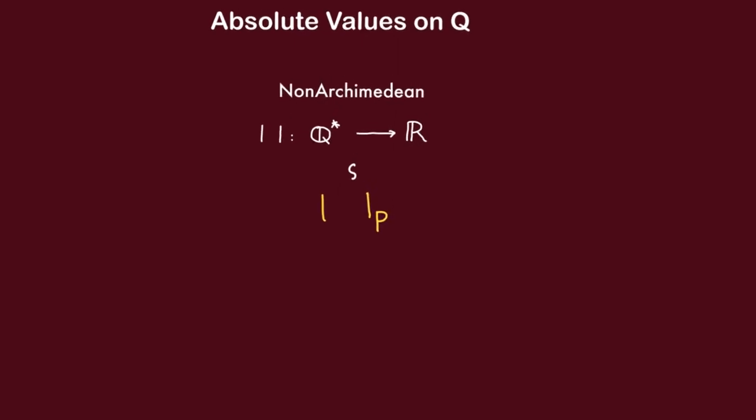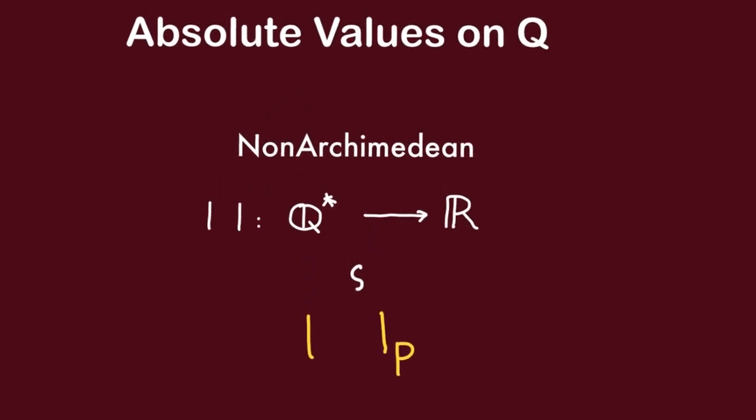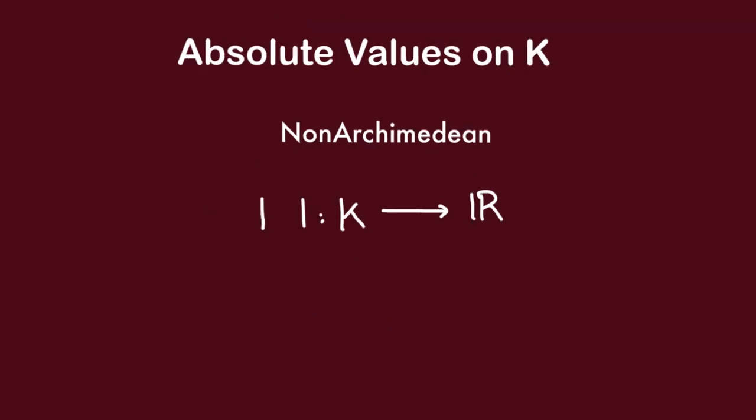And thus we see that every non-Archimedean absolute value on Q is equivalent to a p-adic absolute value.